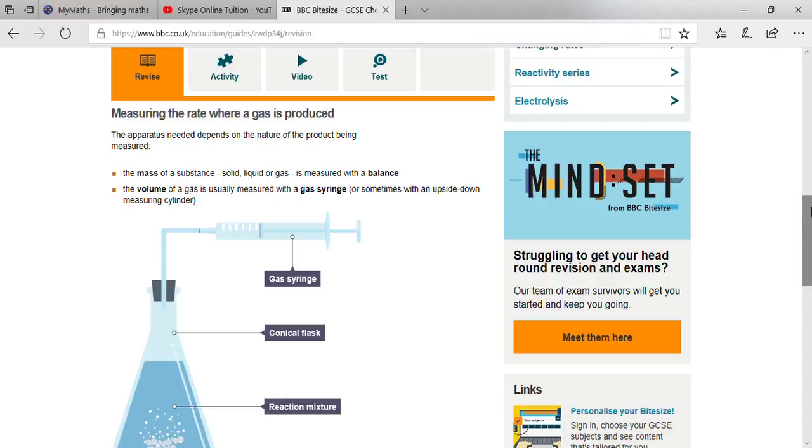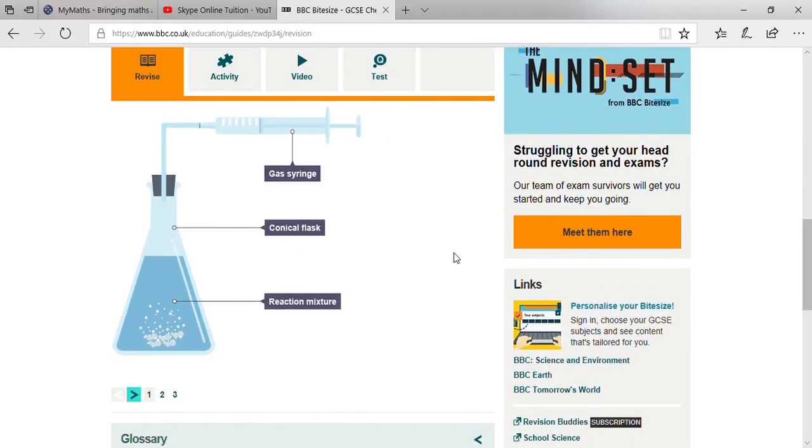So basically whatever you are seeing here, you can see that there is a flat bottom conical flask. There is a reaction mixture that is here, and also that conical flask is there, and a gas syringe is also there. It is the best way to understand.